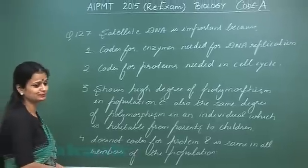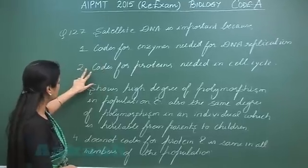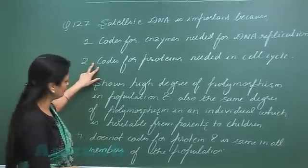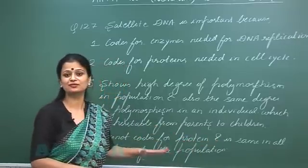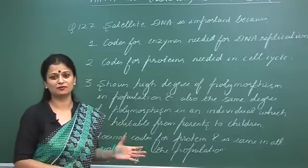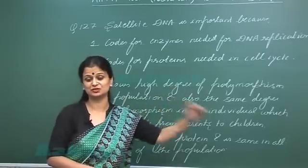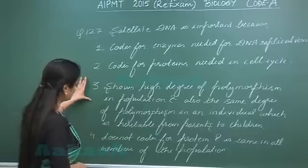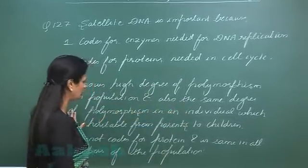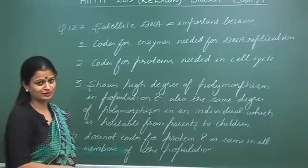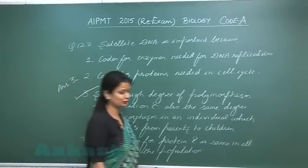Now evaluating the options: Option 1 — codes for enzyme needed for DNA replication — is wrong, they do not form any protein. Option 2 is also wrong. Option 3 — does not code for protein and is same in all members of the species — is incorrect because they are highly polymorphic. The correct answer is option 3: shows high degree of polymorphism in the population.